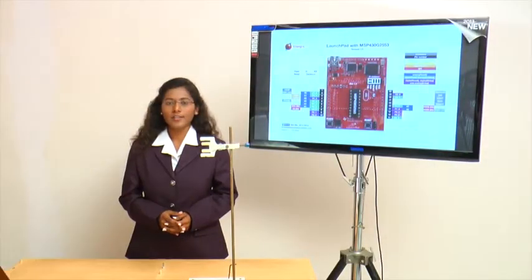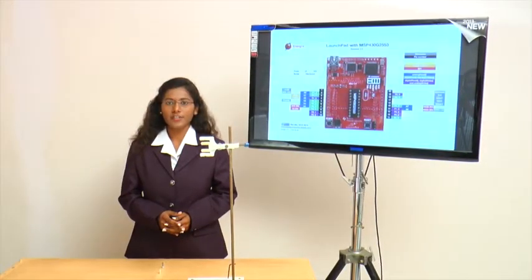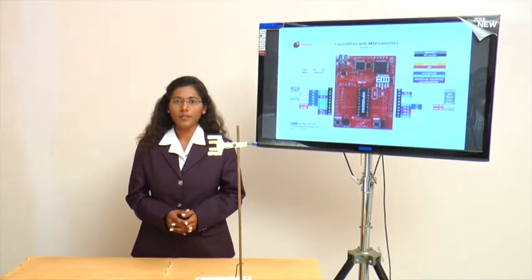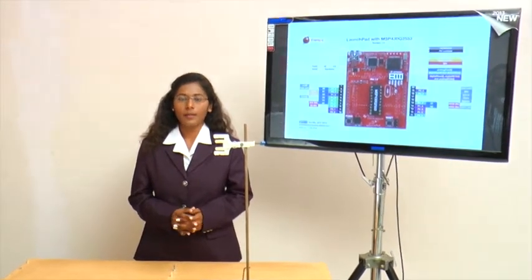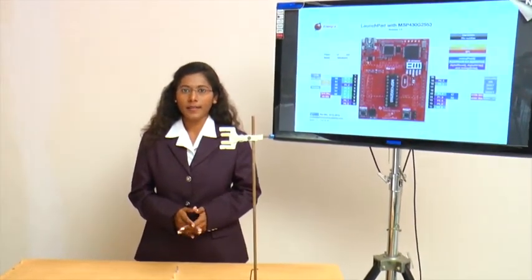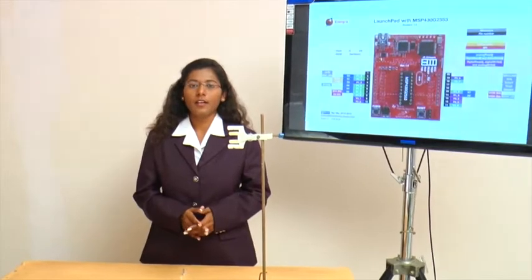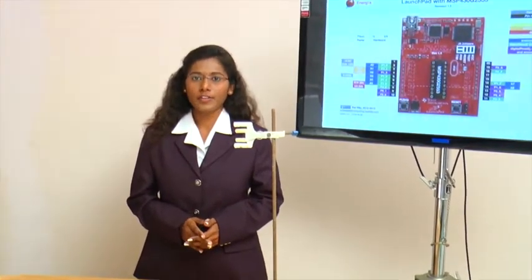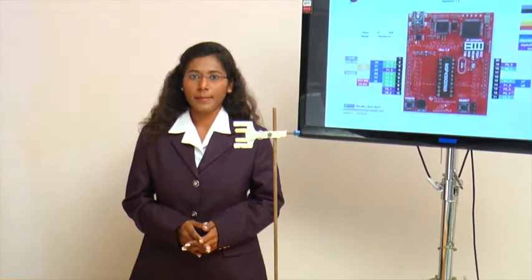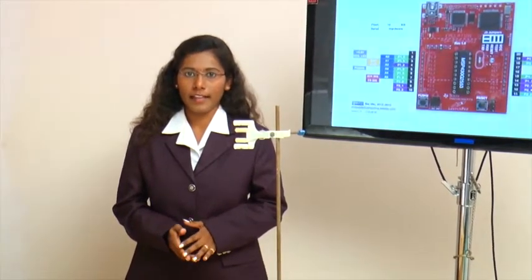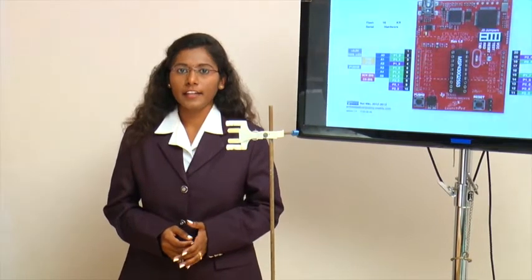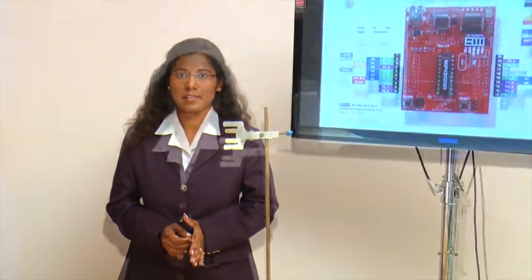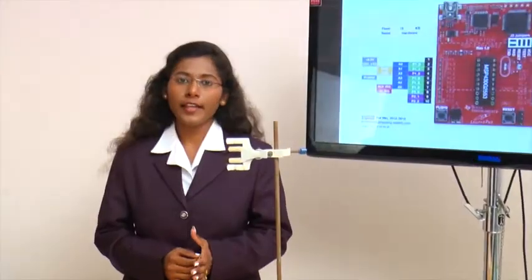We are using the Argentometric titration method. The apparatus used here are a burette, paper, and other chemical solutions. The burette solution is silver nitrate. The sample solution is 10 ml, which contains 1 ml of saliva and 9 ml of water. The indicator we use here is potassium chromate. We are going to take a single test case to explain it.